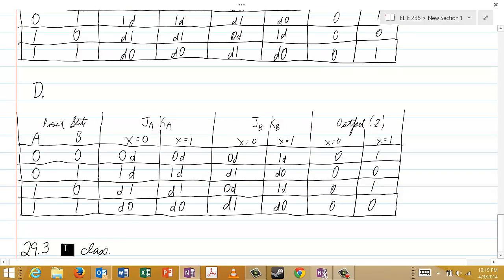And then 29.3 will be in class, but I think you can probably guess what that's going to be, which is that I'm going to, the last step in this sequence would be, before we can actually come up with the circuit, what we want to do, of course, is find JA, KA, JB, KB, and Z.